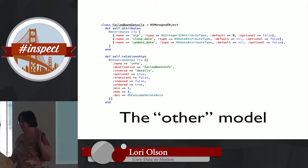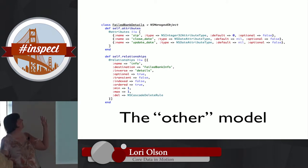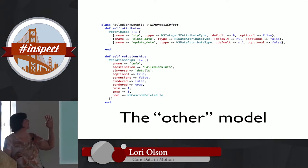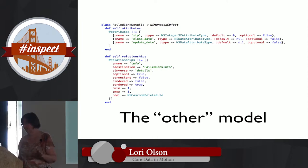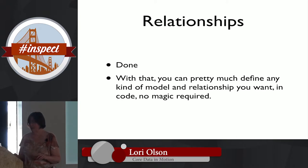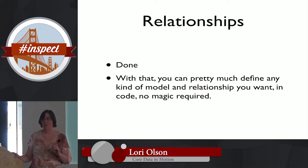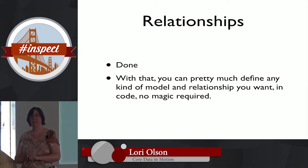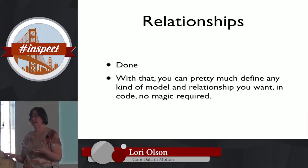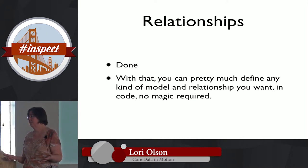The details record is more of the same — attributes for it and the relationship back to the info record. That is all you need in code to define models and to define relationships between models using Core Data. You can define pretty much any kind of model relationship, all in code, without using the Xcode data modeler.